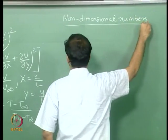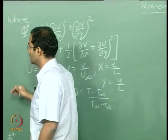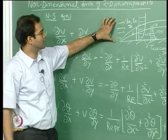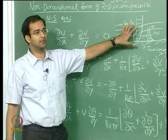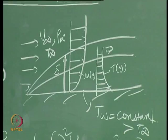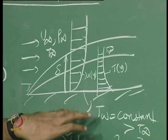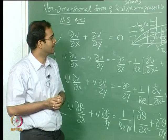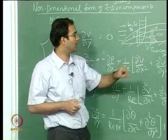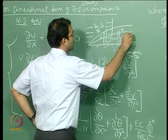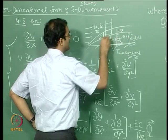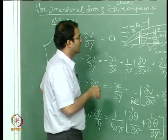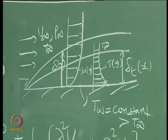For deriving the non-dimensional form, consider the flat plate boundary layer. We assume a uniform free-stream velocity not varying along the x-direction, and a temperature boundary condition applied to the flat plate. This induces a thermal boundary layer developing along with the momentum boundary layer. The thermal boundary layer thickness δ_T and momentum boundary layer thickness δ are both functions of x.